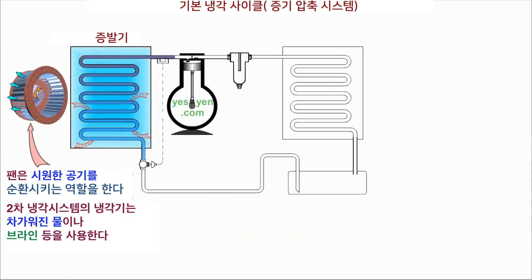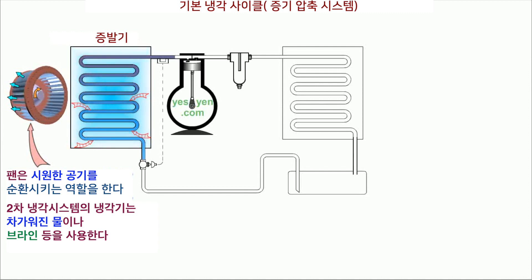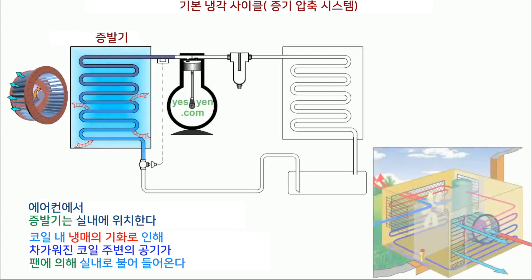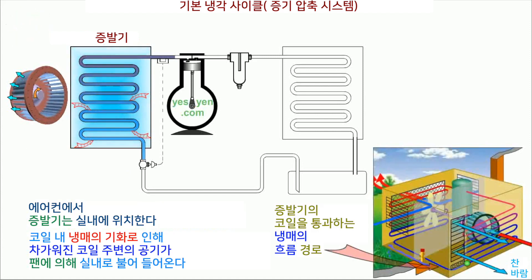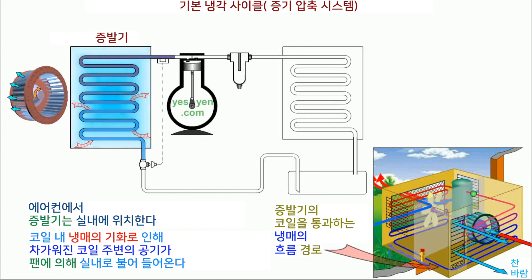Fans are used to circulate the cooled air. In secondary refrigeration systems, chillers are used that circulate cooled water or brine. In an air conditioner providing cooling, the evaporator is located inside the room. Surrounding air that is cooled by vaporization of refrigerant in the coil is blown into the room.